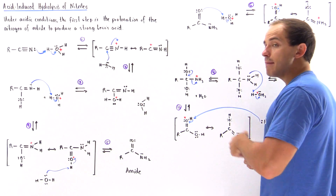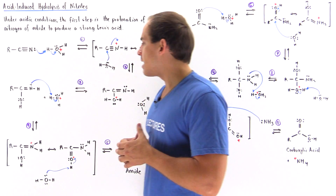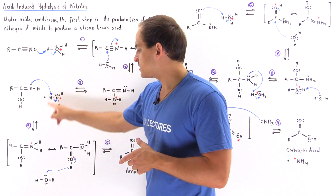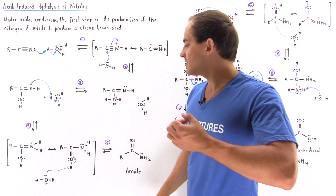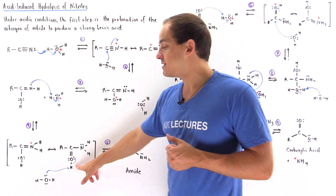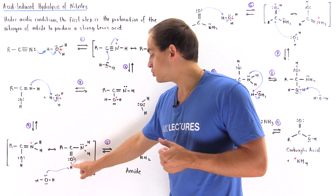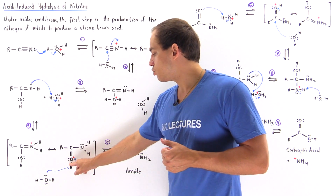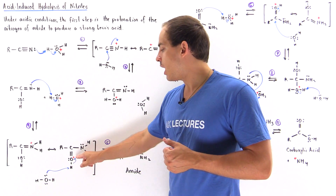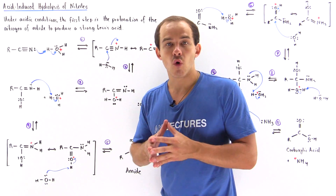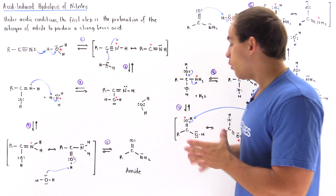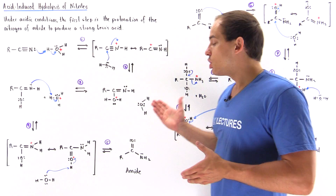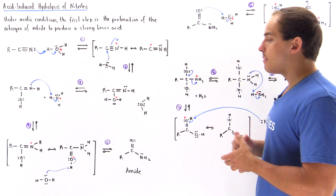In step number five, the water molecule formed in step four acts as the base, deprotonating this oxygen and taking away the H atom. The two electrons go onto our oxygen and we form an amide — the acyl compound called the amide.